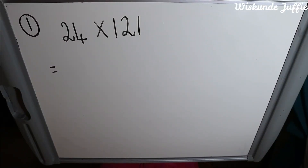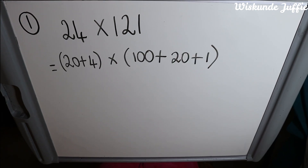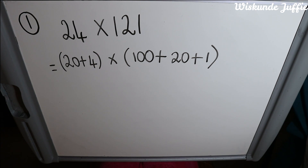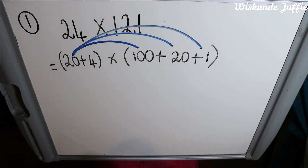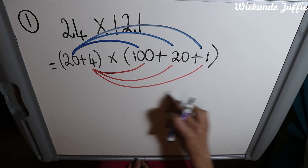In this example my sum is 24 multiplied by 121, and to apply the distributive property of numbers the very first thing I have to do is write each number in expanded notation. So 24 I will write as 20 plus 4, and 121 I will write as 100 plus 20 plus 1. Next I will draw my arrows to indicate which numbers I will multiply by which. Each number in the first bracket is multiplied by each number in the second bracket. So I have 1, 2, 3, 4, 5, 6 bows, and I will then have six answers.